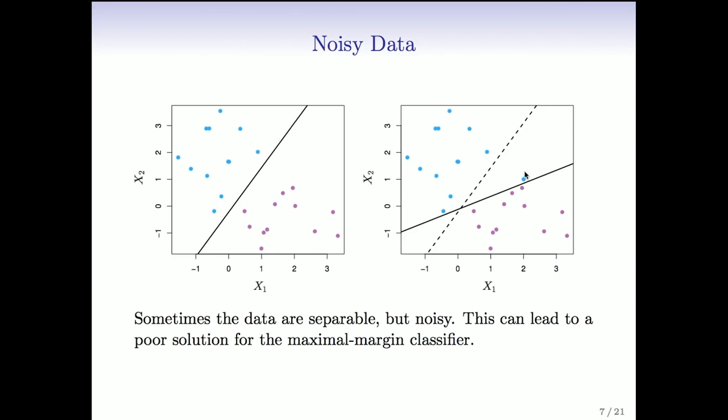What happens if we add one more blue point? Here it is over here. And now we still want to separate in hyperplane. Well, just the presence of that one extra point means we've had to tilt the hyperplane quite dramatically to still get separation.